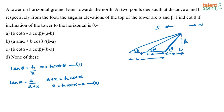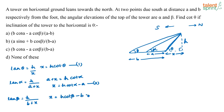Now consider the big right angle triangle for tan beta: tan beta = h/(b + x), so b + x = h·cot beta, which gives x = h·cot beta − b. This is equation 3. Now we have three equations for x.